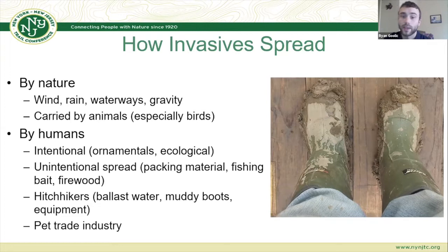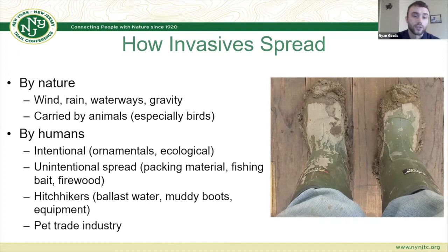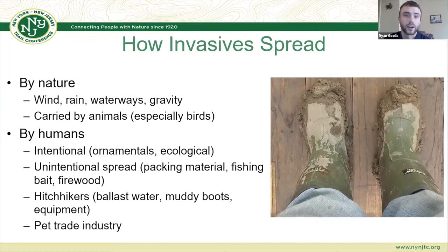Unintentional human spread includes packing material — stiltgrass arrived as packing material — as well as discarding fishing bait, moving firewood, and hitchhikers like zebra mussels in ballast water. Muddy boots can carry a variety of seeds, and uncleaned equipment can also spread invasives. The pet trade industry is also a significant pathway for invasive species spread.